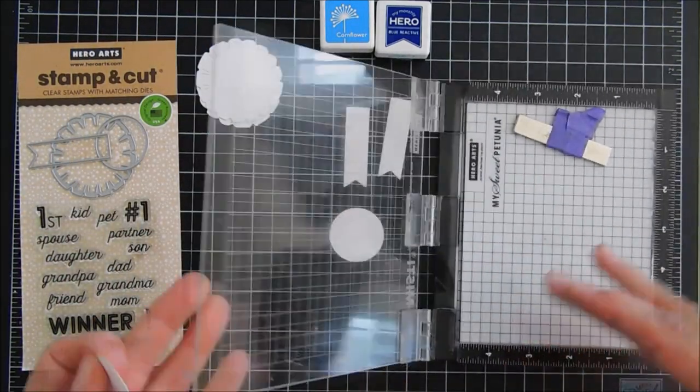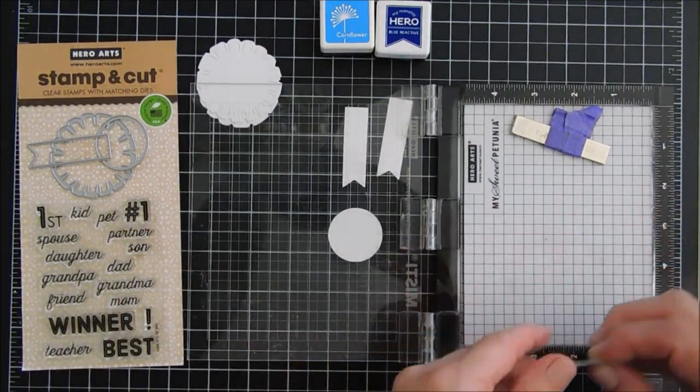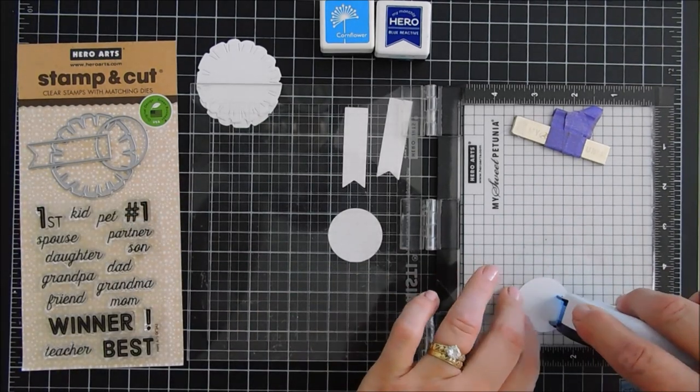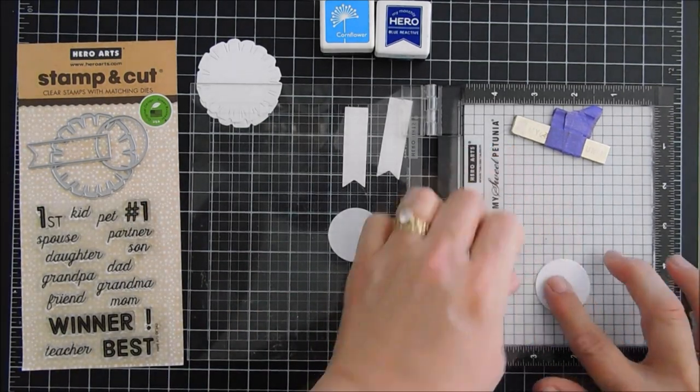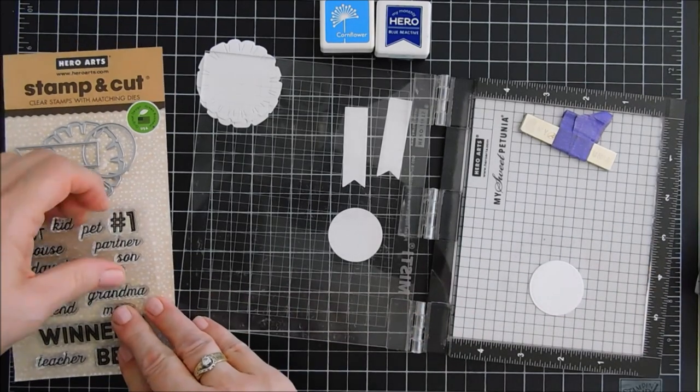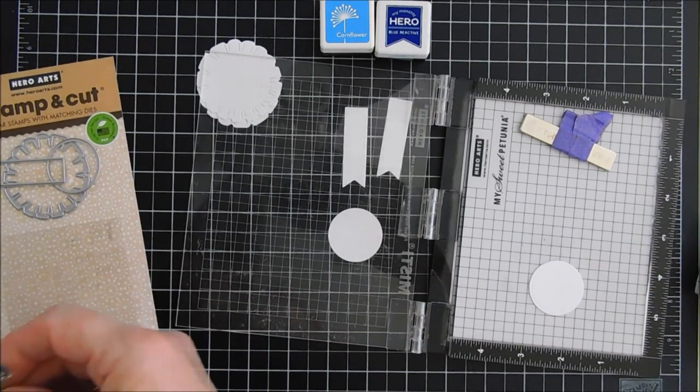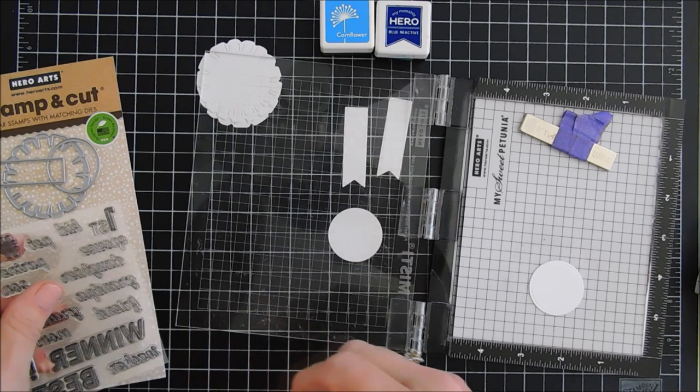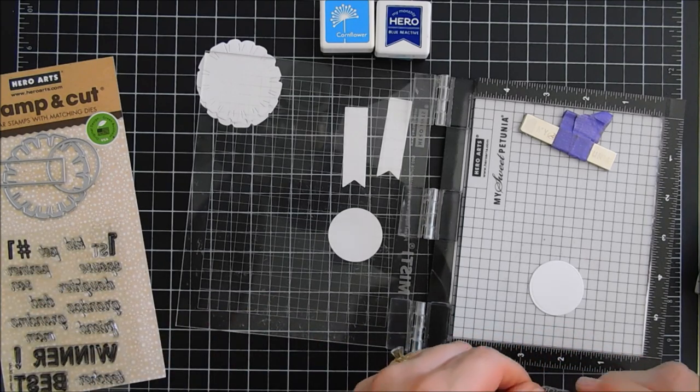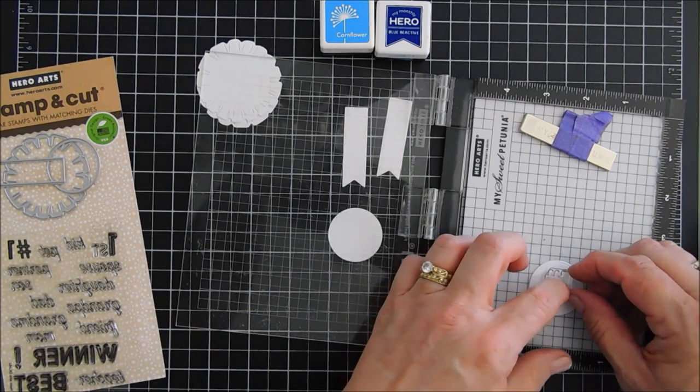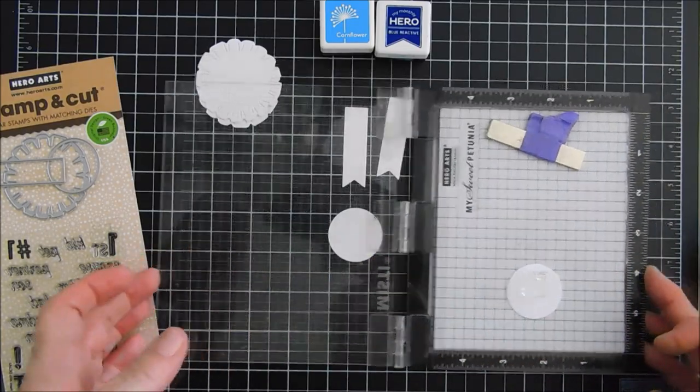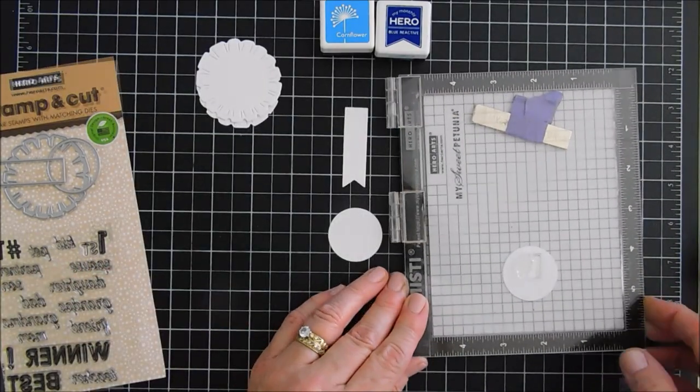I'm going to start off by taking one of the smaller circles. We're going to adhere it in my mini MISTI. I like to add tape behind it and tack it down. Sometimes my magnet is just obstructive or gets in the way, so I just prefer to tape down my card bases and card stock in my MISTI.